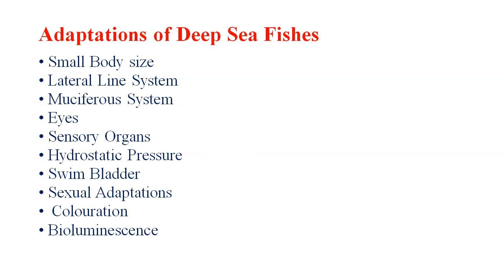Coloration is also a very important adaptation of deep sea fishes. Deep sea animals have a variety of colors — red color seems to be dominant over others. In addition, dark, violet, black, and brown are also quite common. Deep sea fishes are known for their dark reddish and violet coloration. Starfishes, crustaceans, and hydromedusae are red in color, while many copepods are dark violet.